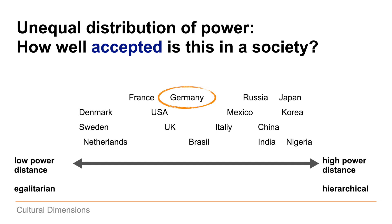Power distance is about the unequal distribution of power and how well accepted this fact is in a society. If you look to the far left, you'll see that Denmark, Sweden or the Netherlands are comparatively egalitarian societies. In comparison, Germany looks much more hierarchical. But if you compare Germany with Japan, Korea or Nigeria, you'll find it's much more egalitarian than those countries, which tend to be more hierarchical with a high acceptance of power distance.